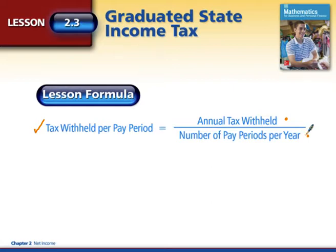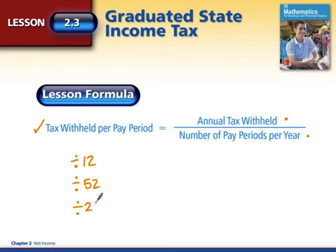In chapter one we reviewed that if it was monthly we would divide by 12, if it was weekly we would divide by 52, if it was bi-weekly we would divide by 26, or semi-monthly we divided by 24. You're going to need to make that your last step when calculating our tax for the state.